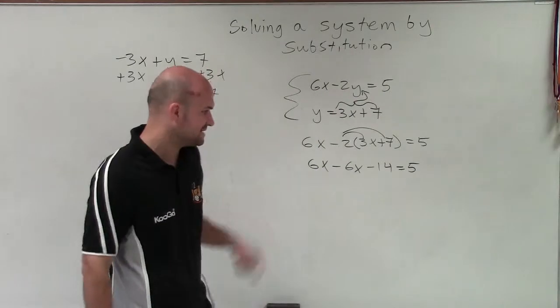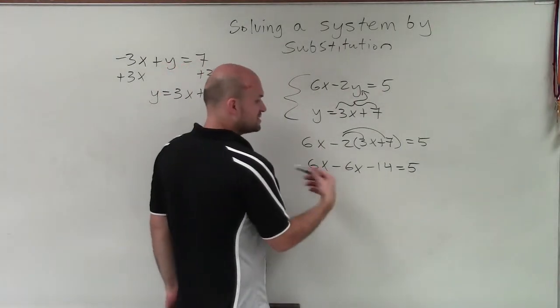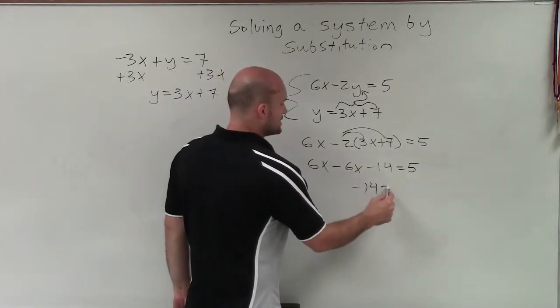What I see here is I get 6x minus 6x, which is 0x. Therefore, I have negative 14 equals 5.